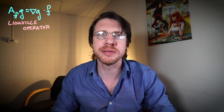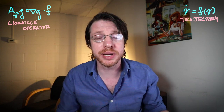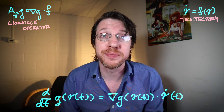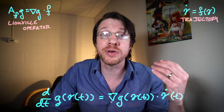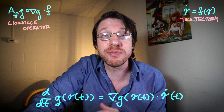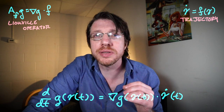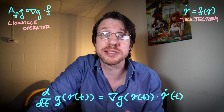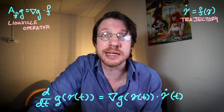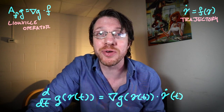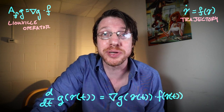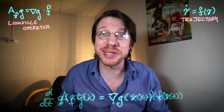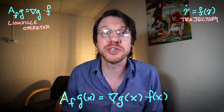We can see this by taking a look at the Liouville operator. How do we get the Liouville operator? You take a trajectory of your dynamical system and put it into a function from your function space. If you take the time derivative, you see that the time derivative of a function composed with the trajectory gives you the gradient of that function composed with the trajectory, times the derivative of that trajectory. If we know the trajectory came from the dynamical system, that derivative is just F of the trajectory. Cover up the trajectory, and you get your Liouville operator: the gradient of G times F.